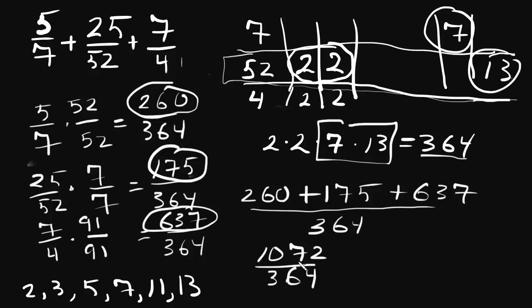And if we wanted to simplify that, and obviously we can because they're both even numbers, we divide the top and the bottom by 2. And if we did that a couple of times, we would find that the fraction reduced to 268/91.